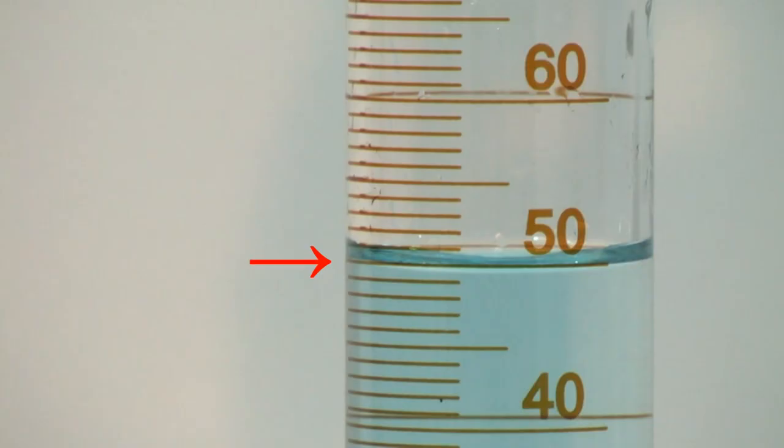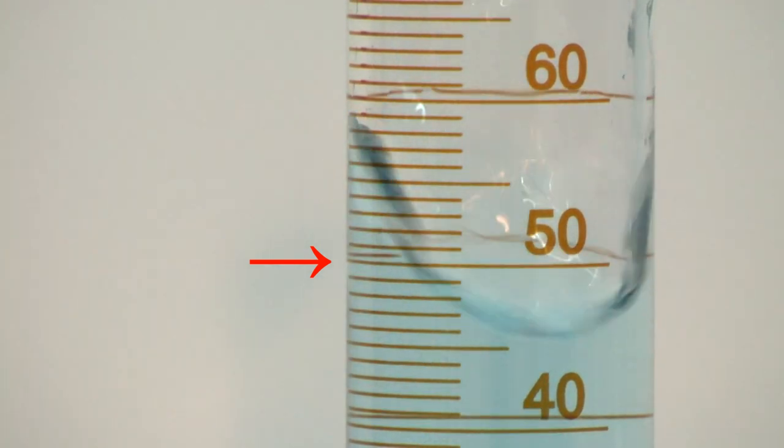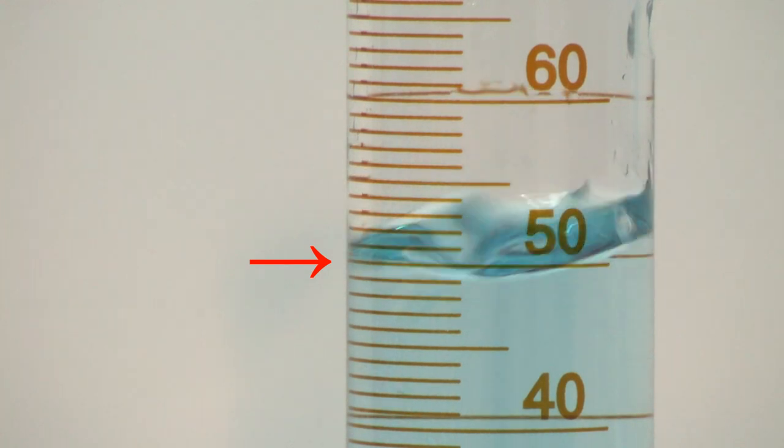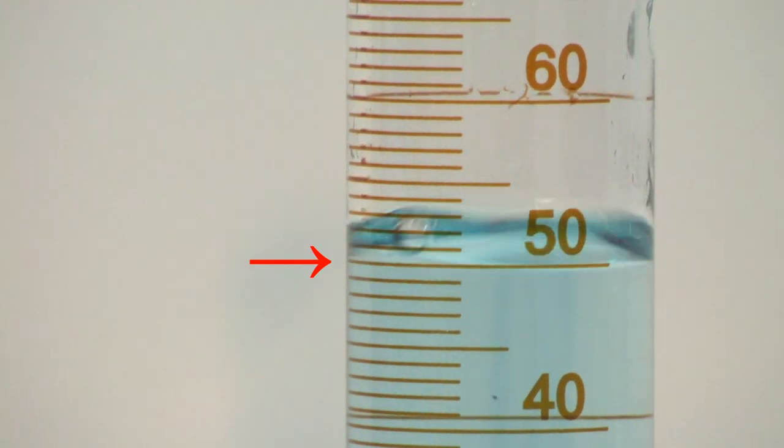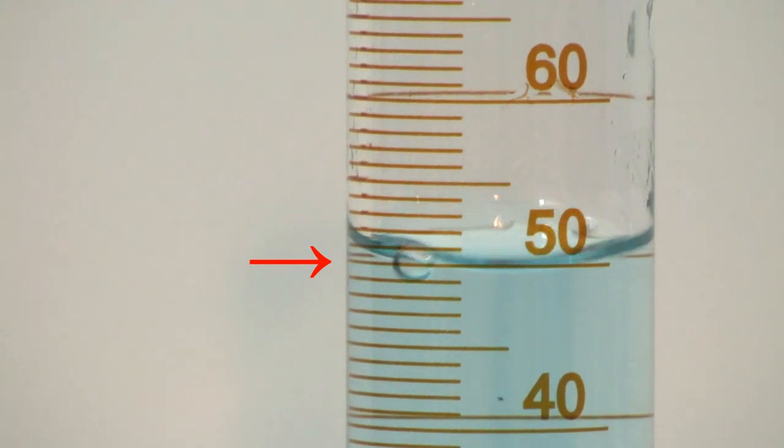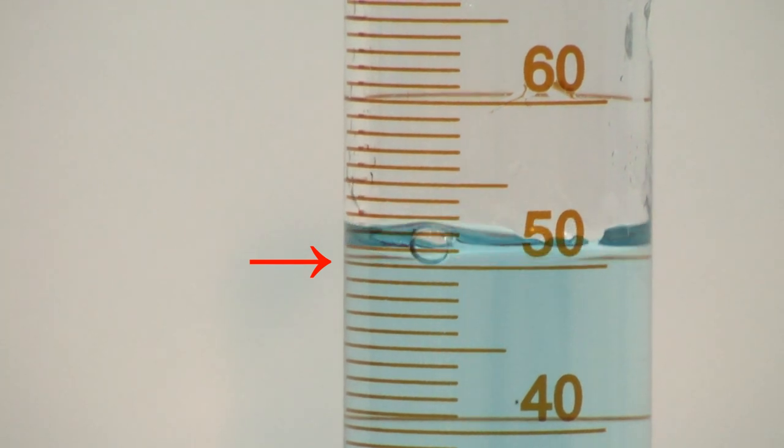Let's see that again close up and in slow motion. Watch the change in the water level. The red arrow shows you where the bottom of the meniscus was before we added the red one cubic centimeter block.